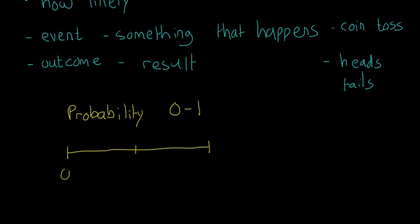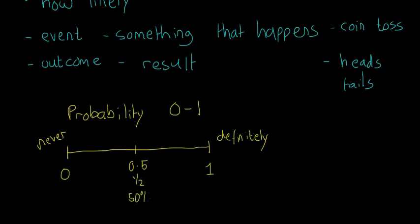Let's put a scale here. At 0 it means it will never happen, and at 1 it means it will definitely happen. So if something has a probability of 0 it cannot happen; if something has a probability of 1 it definitely will happen. Anything in between is either getting more likely or less likely. Right in the middle we have 0.5.